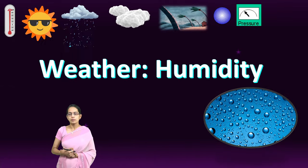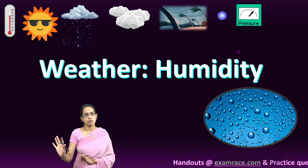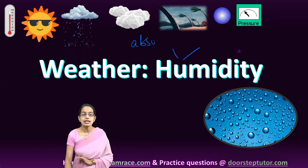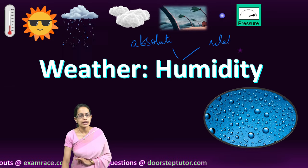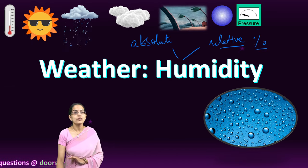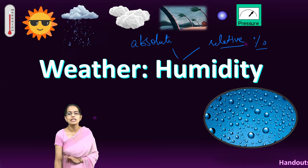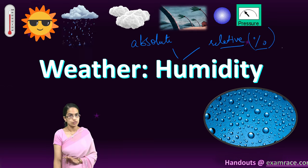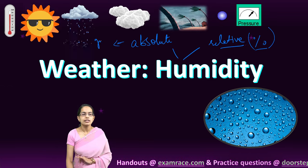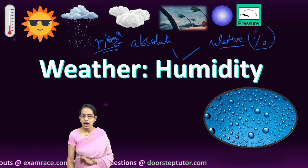Humidity is the amount of water vapor in the atmosphere. It can be explained as either absolute humidity or relative humidity. Relative humidity — since it is relative — is always expressed as a percentage, which is very important. Absolute humidity is expressed in grams per cubic meters.